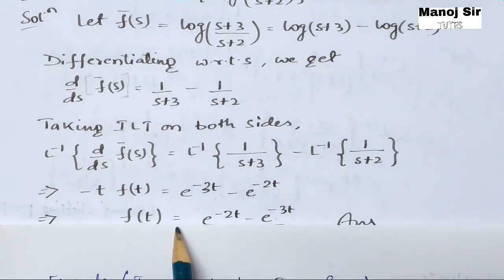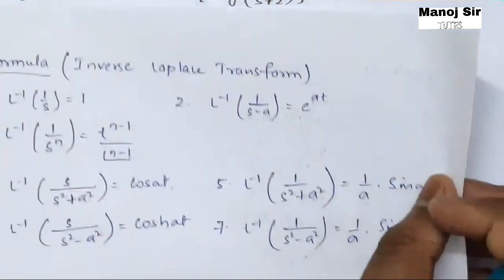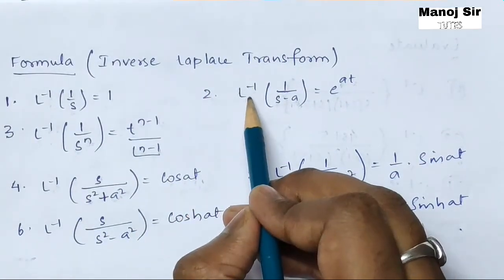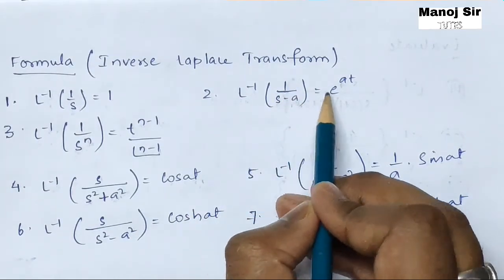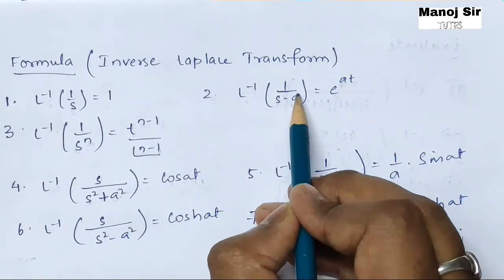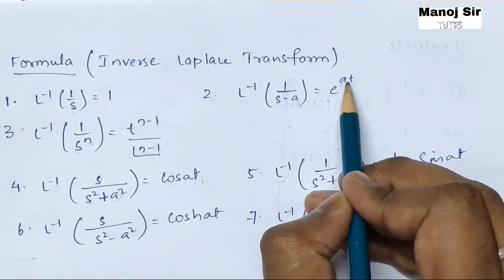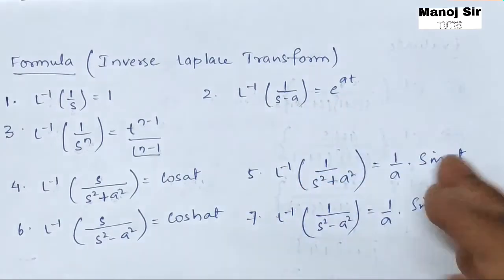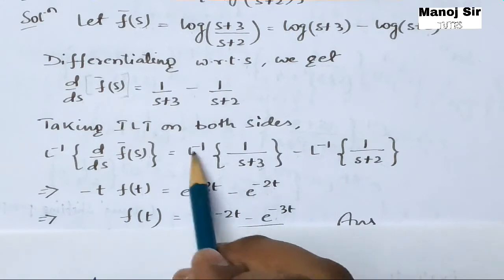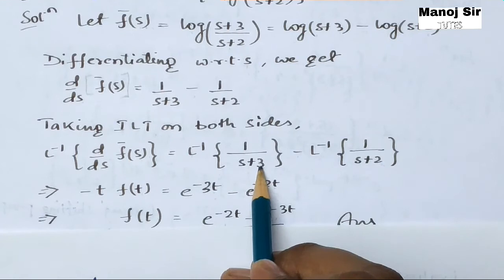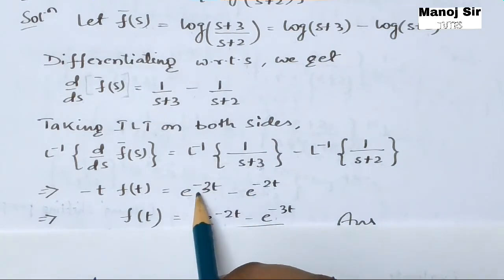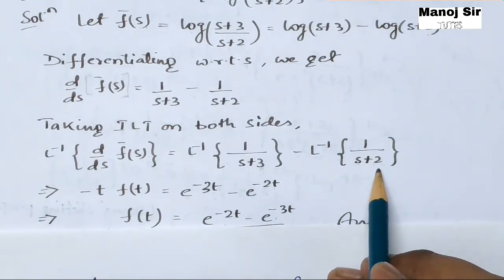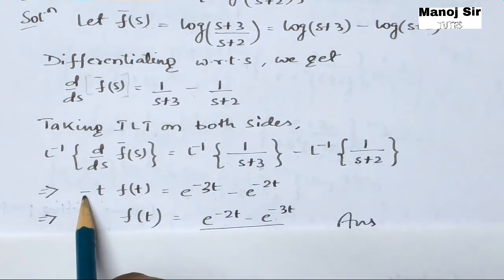For inverse Laplace transform of 1/(s+3), we use the formula: inverse Laplace transform of 1/(s−a) equals e^(at). Here the value of a is minus 3, so this gives e^(−3t). Similarly, for 1/(s+2), the value of a is minus 2, giving e^(−2t). So we have: minus t·f(t) = e^(−3t) minus e^(−2t).